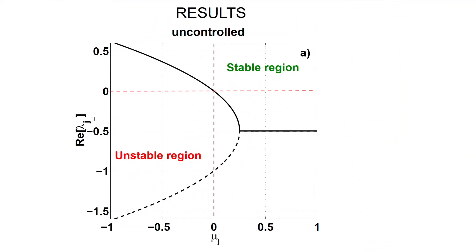First, we investigated the linear stability of the uncontrolled system. For certain parameters of the network, it becomes unstable so that we distinguish a stable and an unstable region.